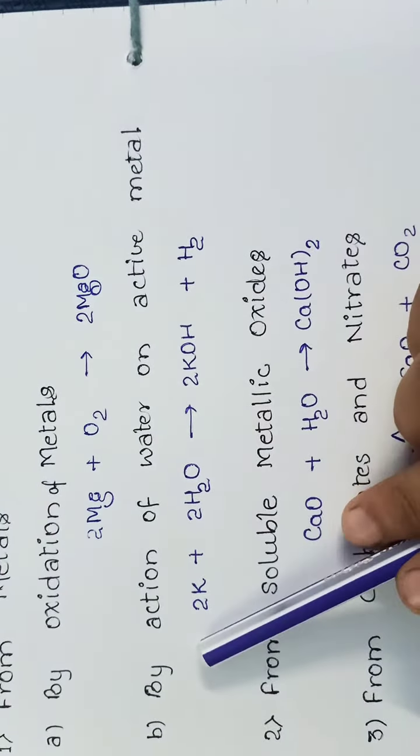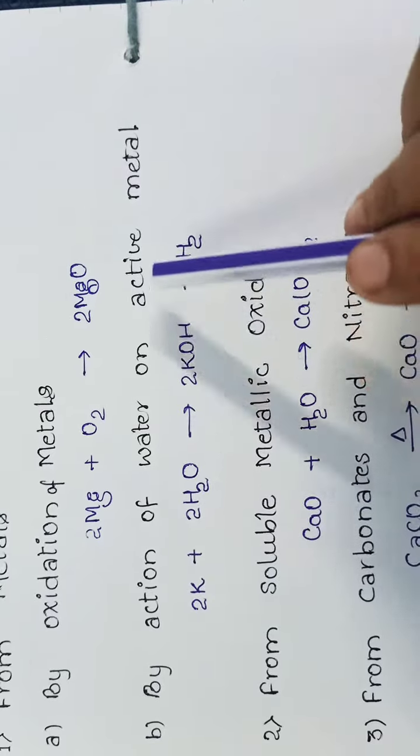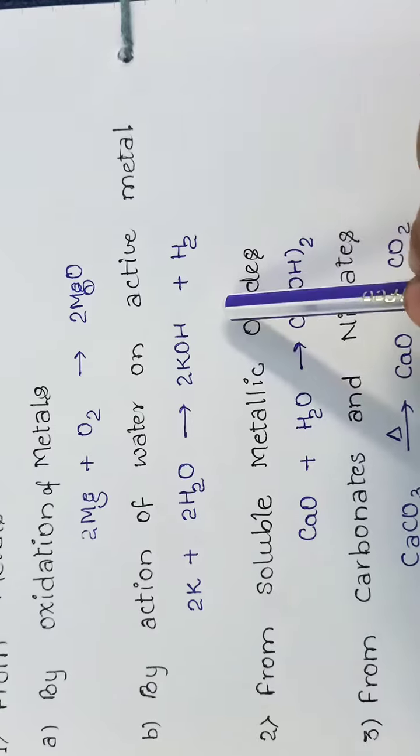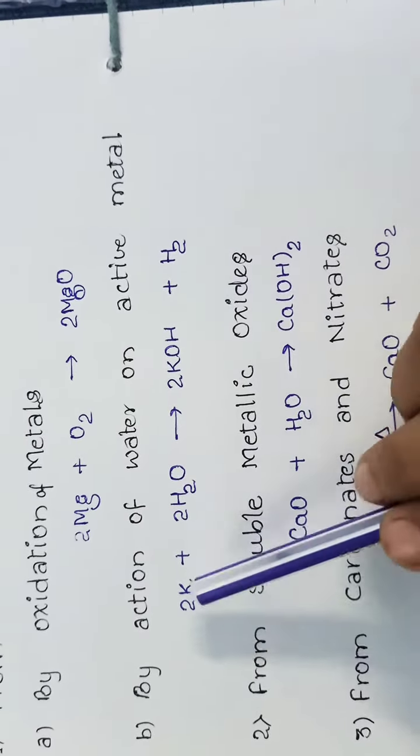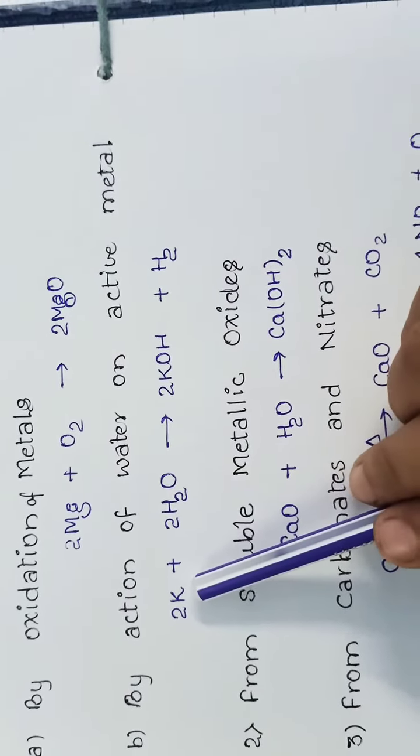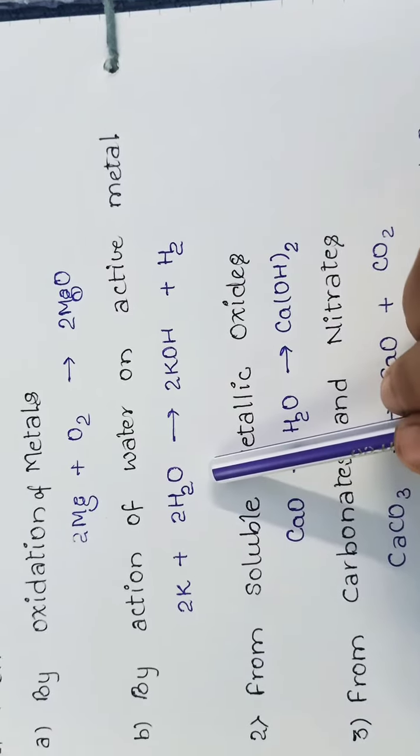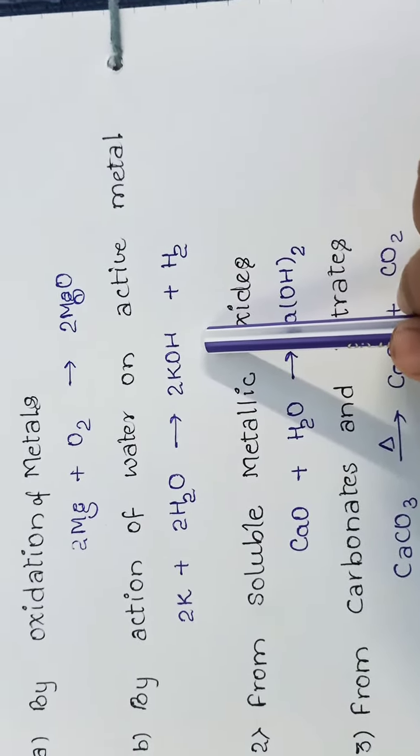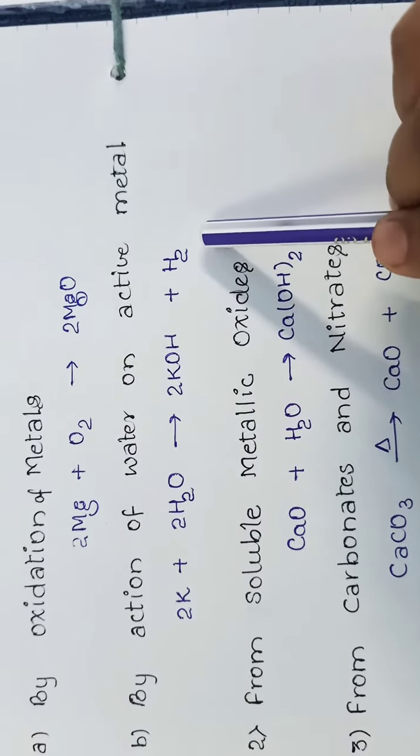Second, by action of water on active metal. When active metal reacts with water, it gives bases also. We take potassium. When 2 mol of potassium reacts with 2 mol of water to give 2 mol of potassium hydroxide and releases hydrogen gas.